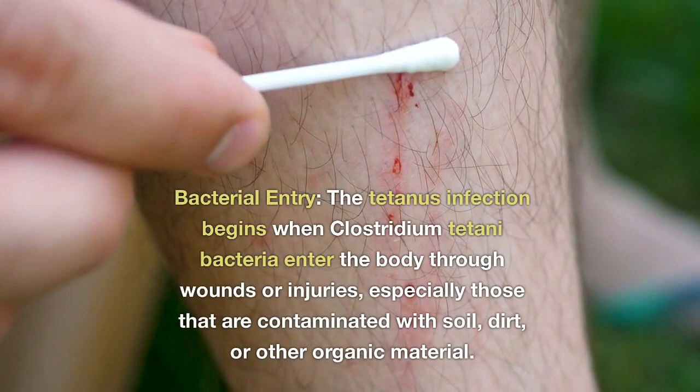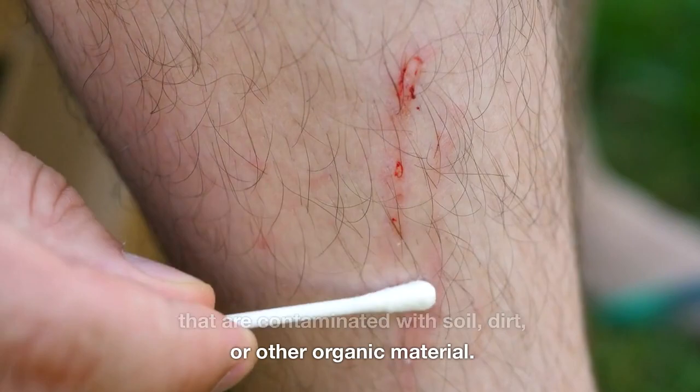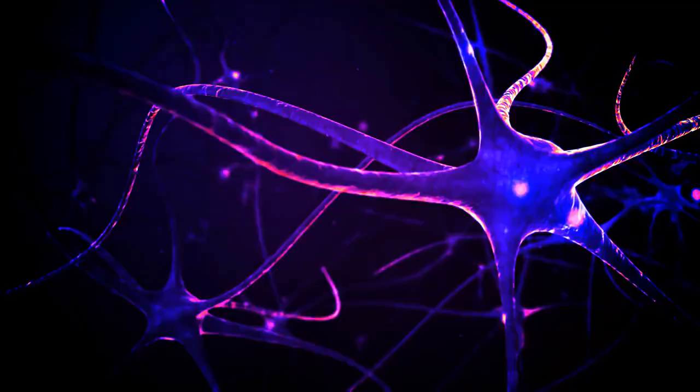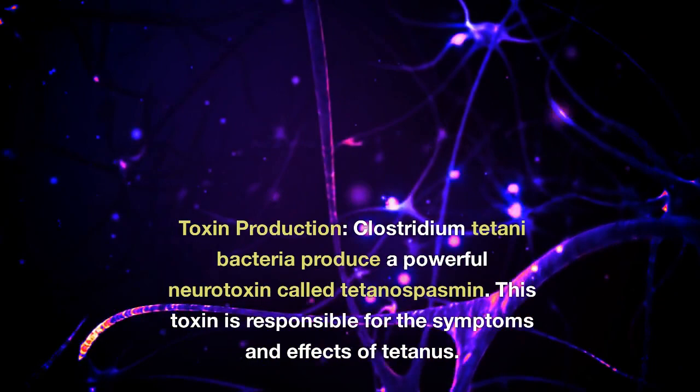How does tetanus cause disease — pathogenicity in humans? Bacterial entry: The tetanus infection begins when Clostridium tetani bacteria enter the body through wounds or injuries, especially those that are contaminated with soil, dirt, or other organic material. Bacterial multiplication: Once inside the body, the bacteria can multiply and grow. Toxin production: Clostridium tetani bacteria produce a powerful neurotoxin called tetanospasmin. This toxin is responsible for the symptoms and effects of tetanus.